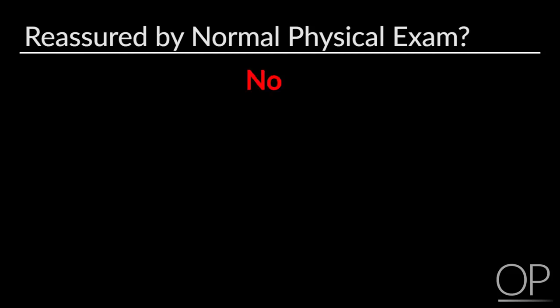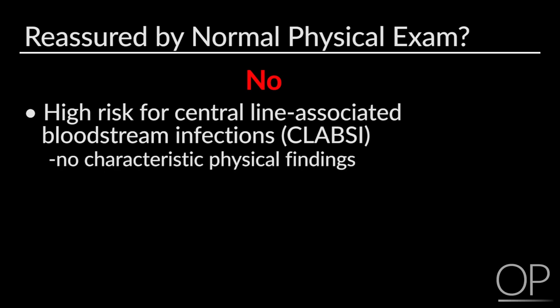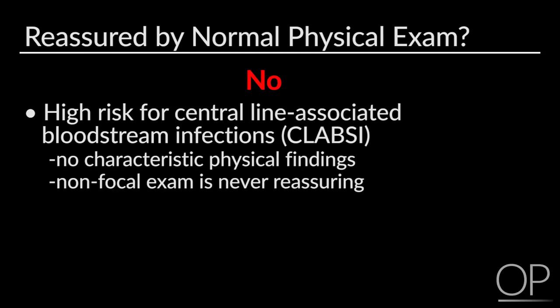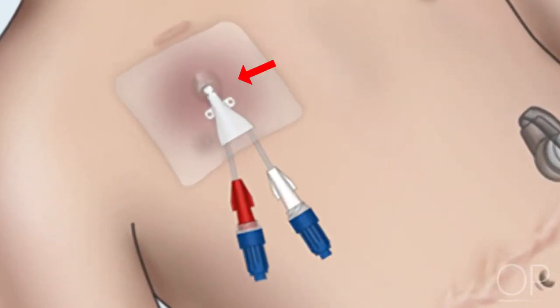The answer is no. Patients with central venous catheters and fever are at high risk of central line associated bloodstream infections. There are no characteristic physical findings for central line associated bloodstream infection. Therefore, a non-focal exam is never reassuring. The physical exam, however, might yield information regarding an alternative focus of infection, but this does not rule out central line associated bloodstream infection. Infections of the soft tissues surrounding the central line exit site are also serious and deserve medical attention. However, bloodstream infections are often unrelated to surrounding tissue and involve only the bloodstream and catheter.